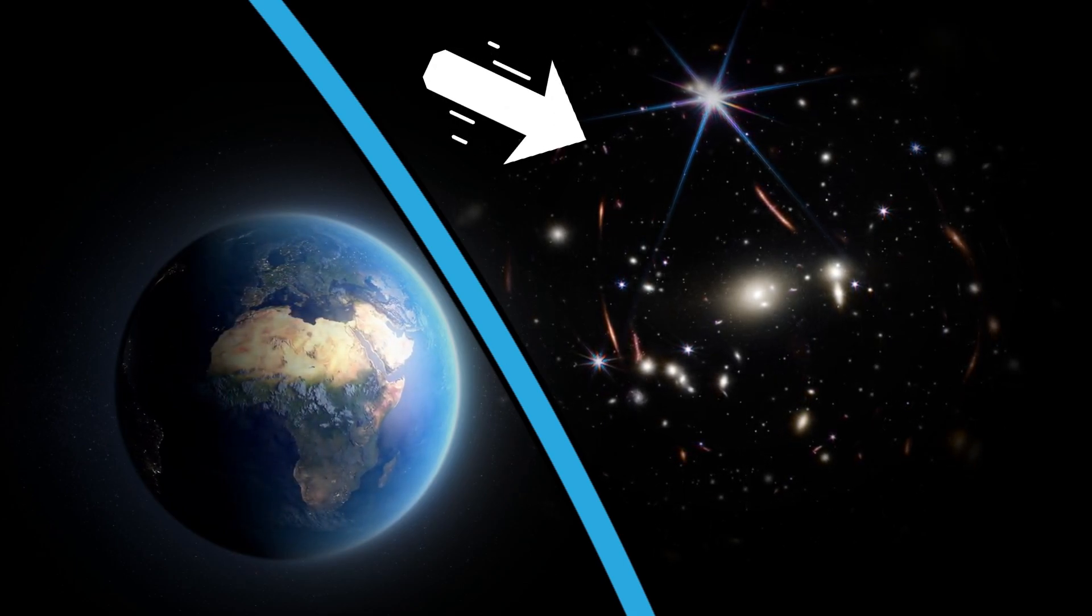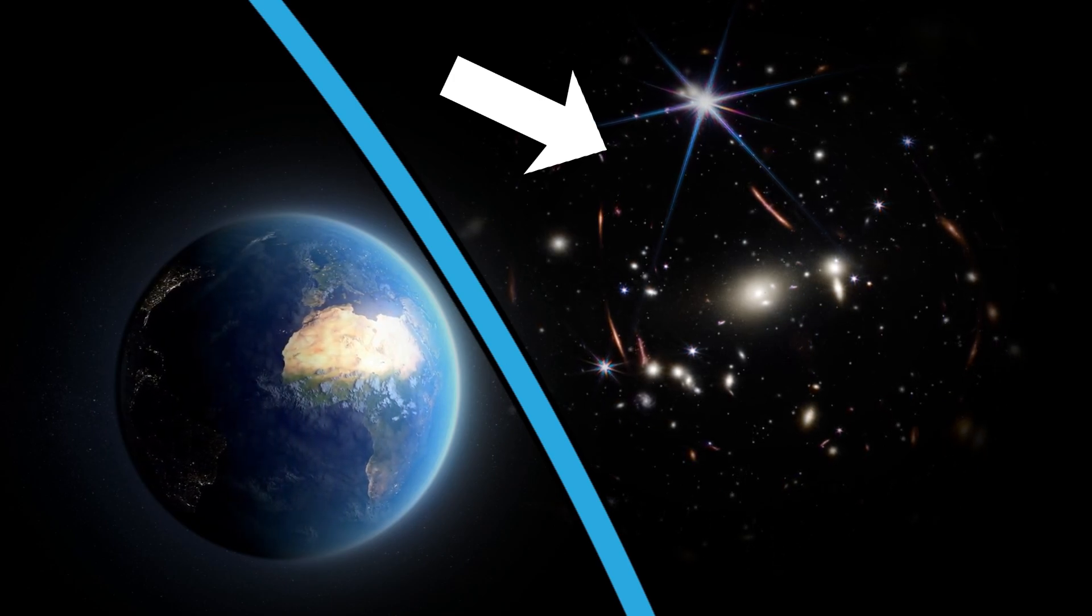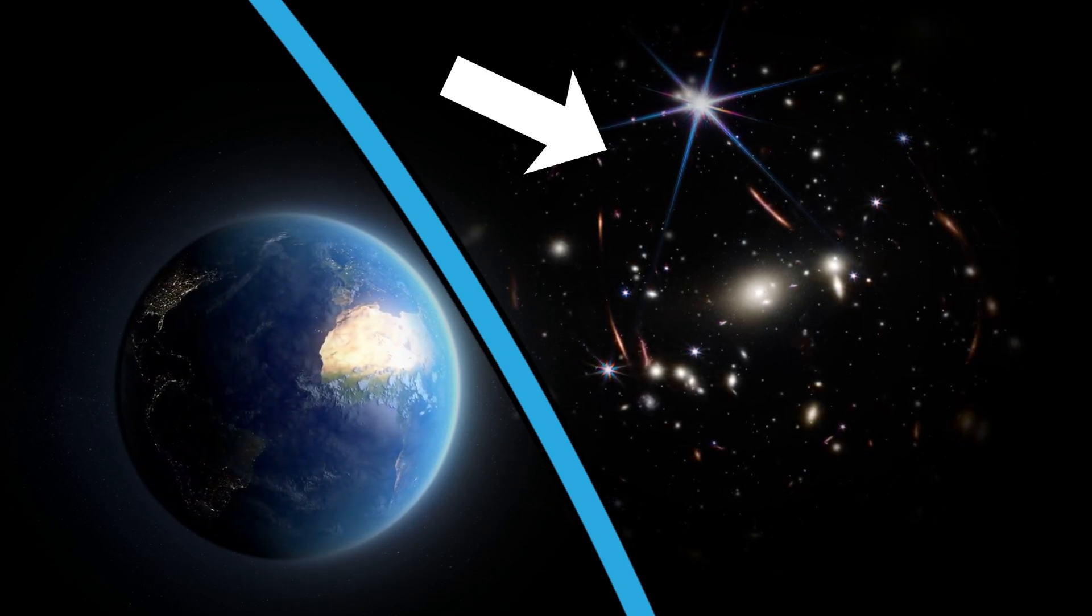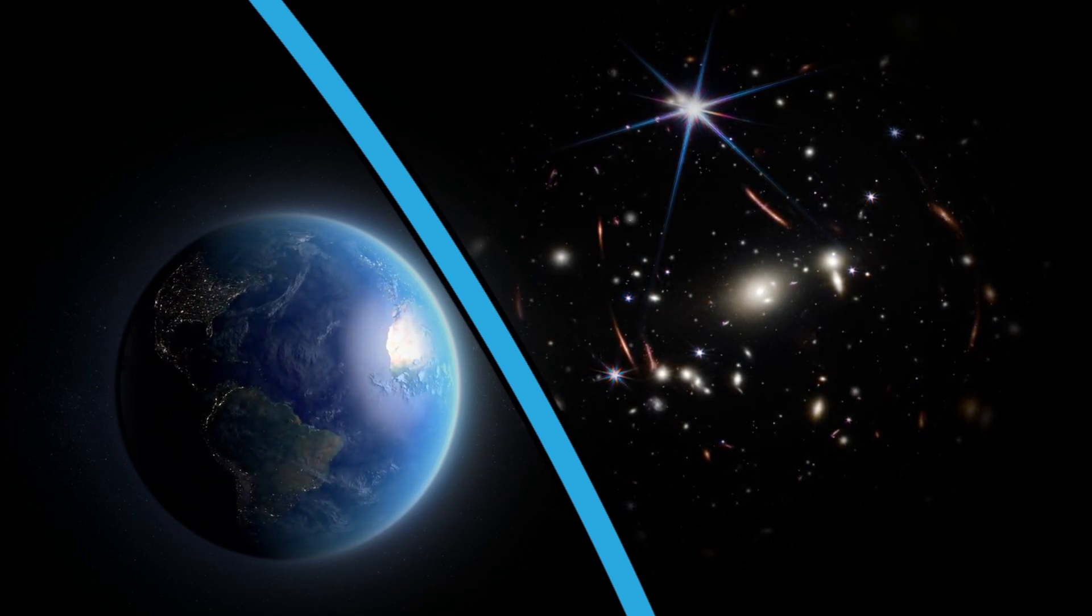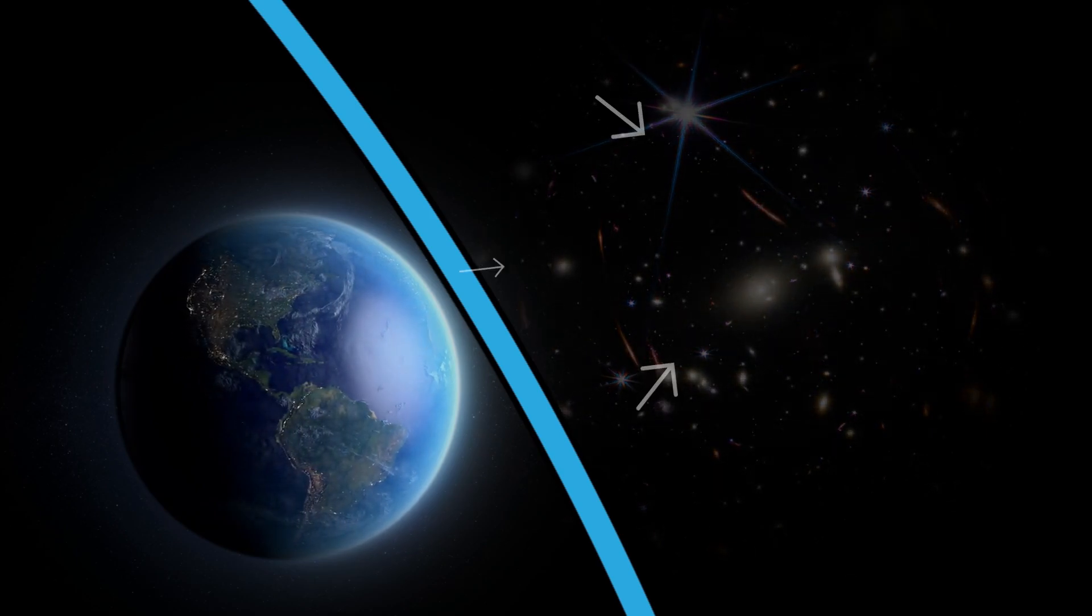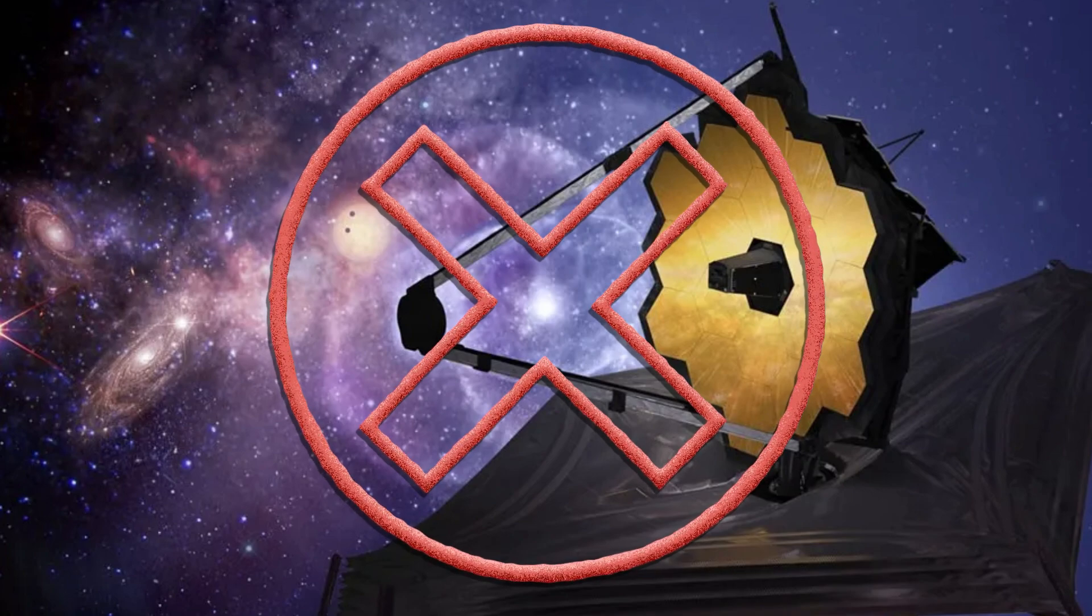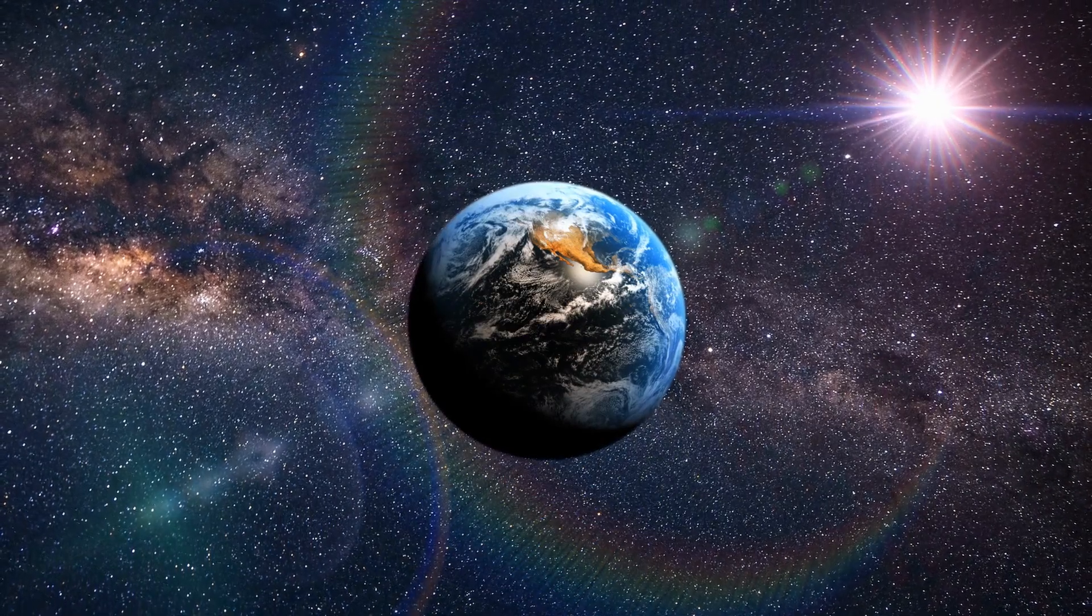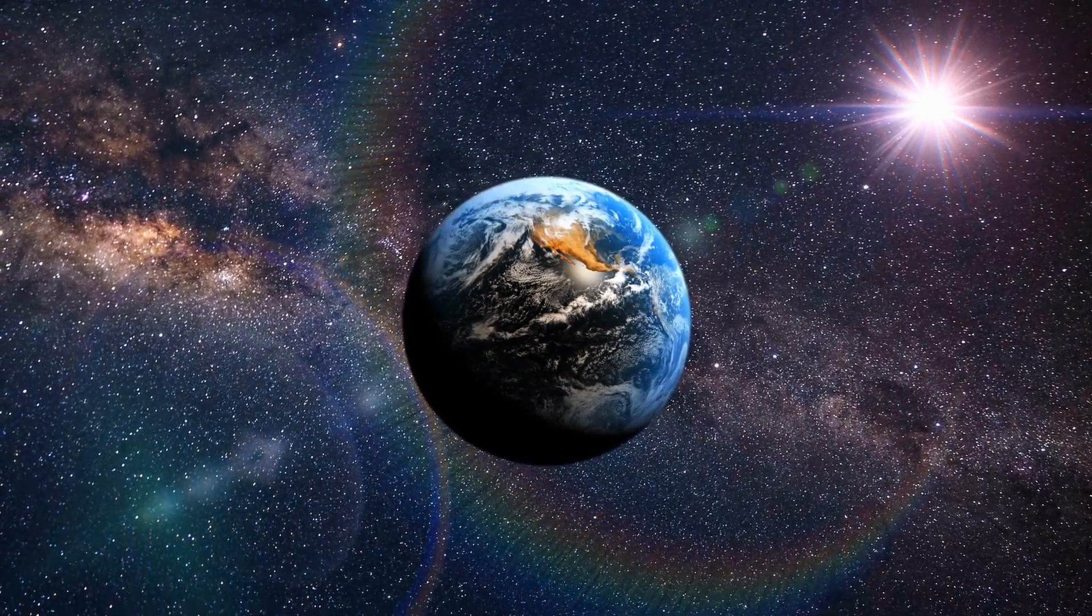The light emitted from within this sphere must have embarked on its luminous journey long ago, ensuring its arrival at our vantage point. Conversely, anything positioned outside this celestial boundary remains eternally invisible to us. Even with the most robust theoretical telescopes, peering beyond this limit remains futile, as the light from those realms has yet to reach us.